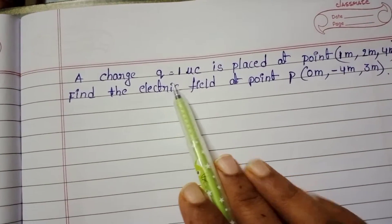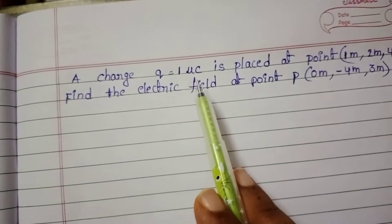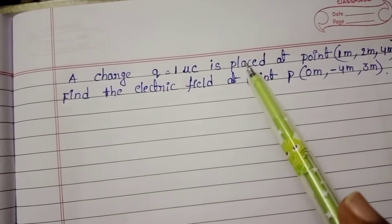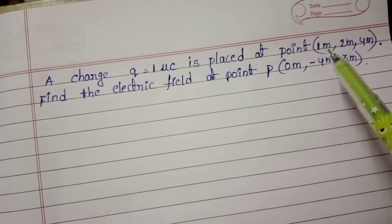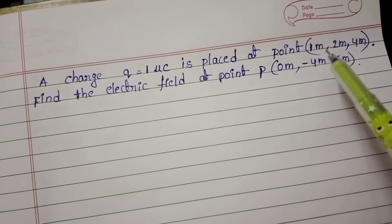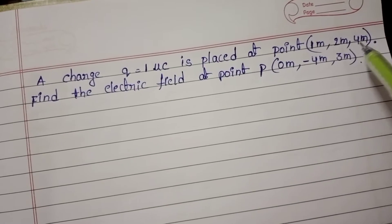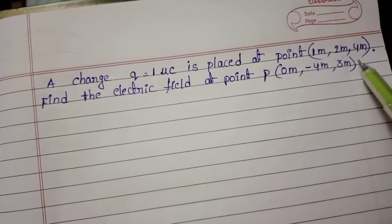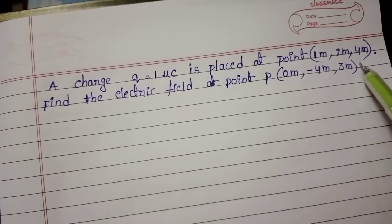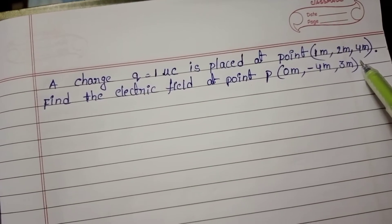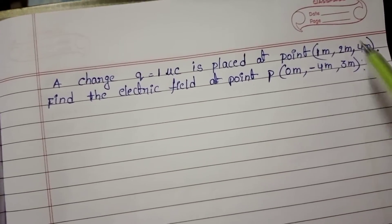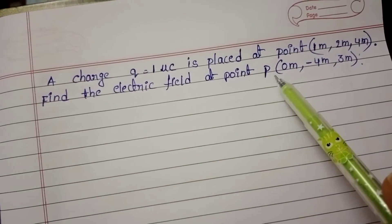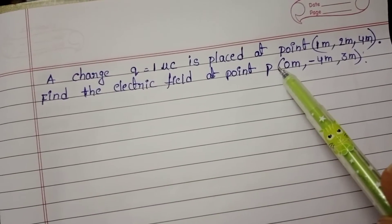A charge QE equals 1 microcoulomb is placed at a point 1 meter, 2 meter, 4 meter. This is the position of the charge. Find the electric field at point P.